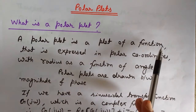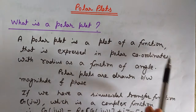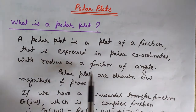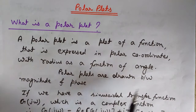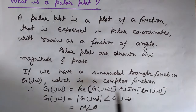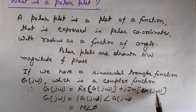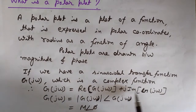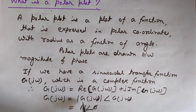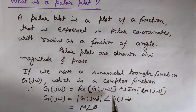A polar plot is a plot of a function expressed in polar coordinates. We draw these polar plots in polar coordinates with radius as a function of angle. The polar plots are drawn between magnitude and phase. If we have a sinusoidal transfer function G(jω), it is a complex function, so we can represent it as the summation of its real and imaginary parts: G(jω) = Re[G(jω)] + j·Im[G(jω)]. From this we can find the magnitude and angle.